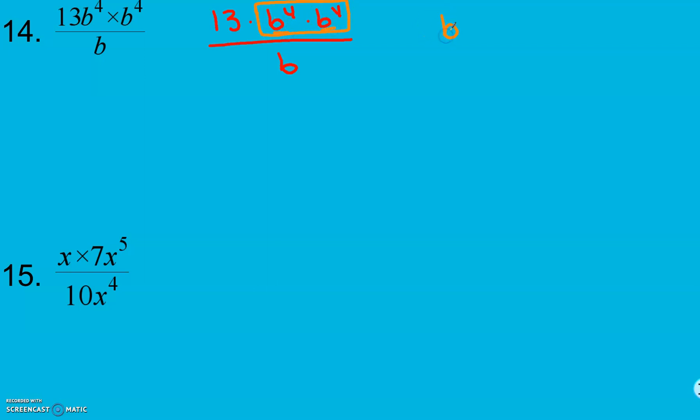Same base, so I keep that. And I go ahead and add my numerators. 4 plus 4 gives me 8. I bring over my 13 that I didn't change, and I'm still dividing by the b. Those didn't change. The only thing that changed was inside the box there.